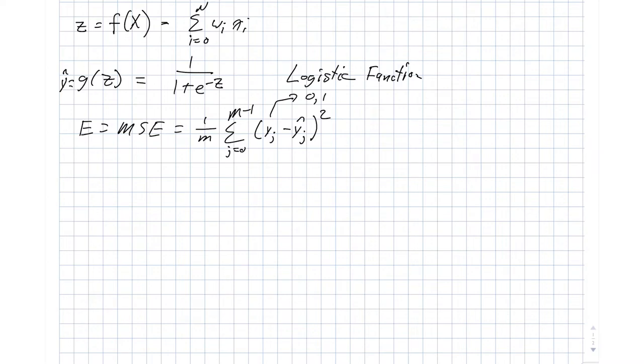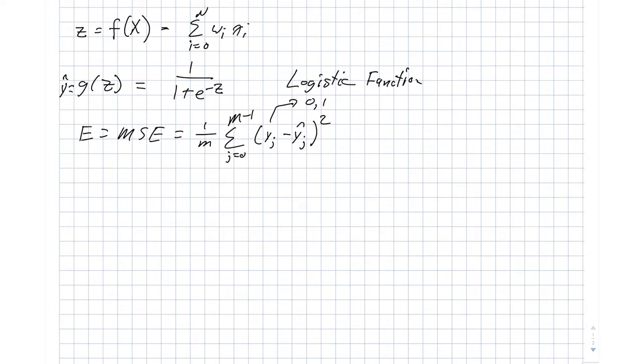And then our y hats, of course, range between 0 and 1. And in fact, they can't be exactly equal to either one of those, just by the nature of our logistic function. So in order to do gradient descent, what we need to be able to do is compute this partial derivative dE dW of some i.